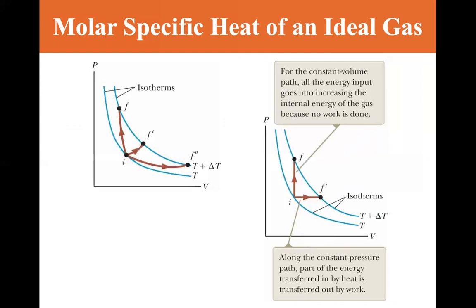For the constant volume, the change in internal energy is equal to nCV delta T. So CV, if we solve for CV, we can see that CV is equal to 1 over n delta E internal divided by delta T, which we can make that infinitesimal, 1 over n dE internal dT.